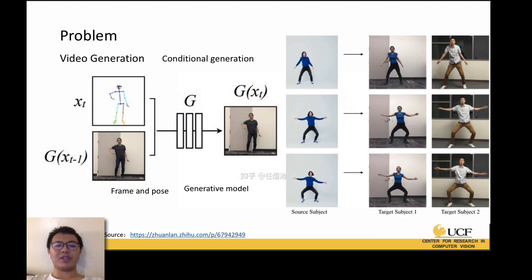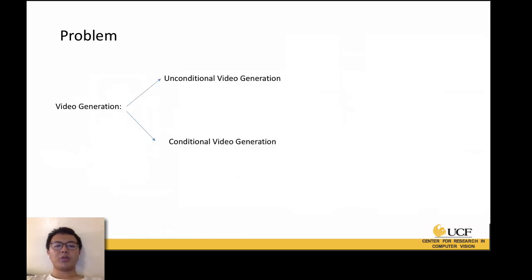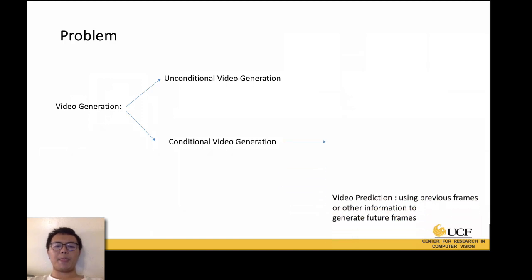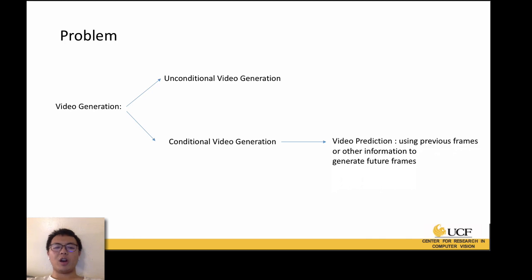The input in that case is a frame and the corresponding human pose image. So we can build two categories: unconditional video generation, which takes noise as input to generate a new video, and conditional generation. Today, our task as discussed in the title is video prediction, which belongs to conditional generation — using past frames to generate future frames, with additional conditions to assist the process.